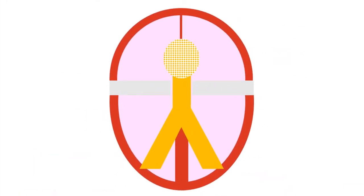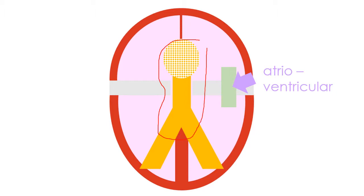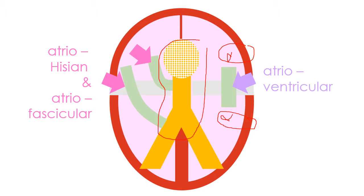We consider, as accessory pathways, three types of intracardiac connections apart from the normal AV bundle or AV node–His axis. The first type are the so-called atrioventricular accessory pathways that connect the atrial and ventricular myocardium at sites where both types of myocardial tissues should be electrically and anatomically isolated. The second type connect the atrial myocardium with elements of the normal AV bundle below the AV node — examples being the atrio-hisian connections and the atrio-fascicular connections.